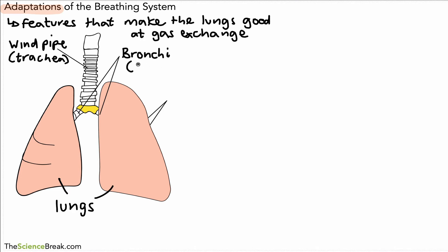The windpipe brings air in and it branches off into two other tubes, and these are called the bronchi. If you've got a single one, it's called a bronchus. If you have more than one, it's bronchi.